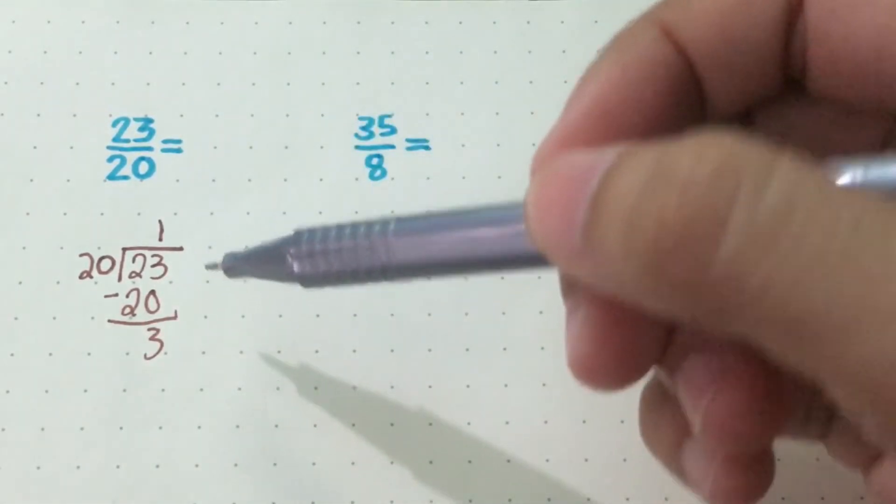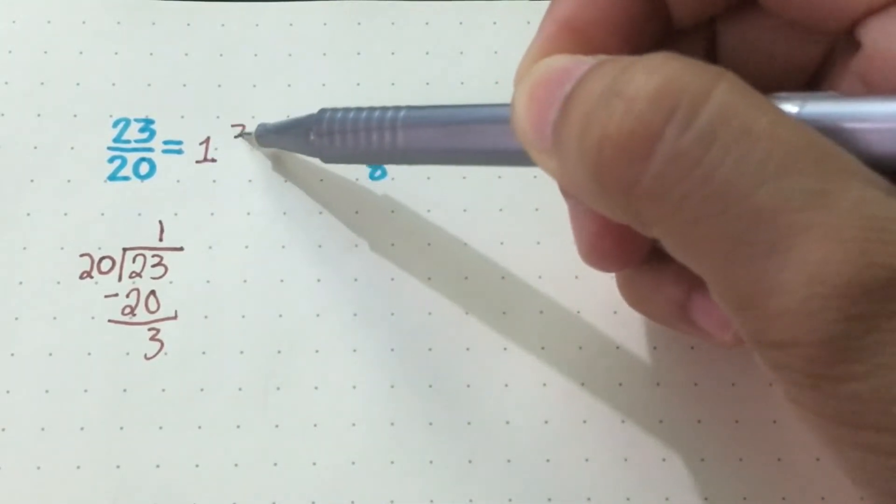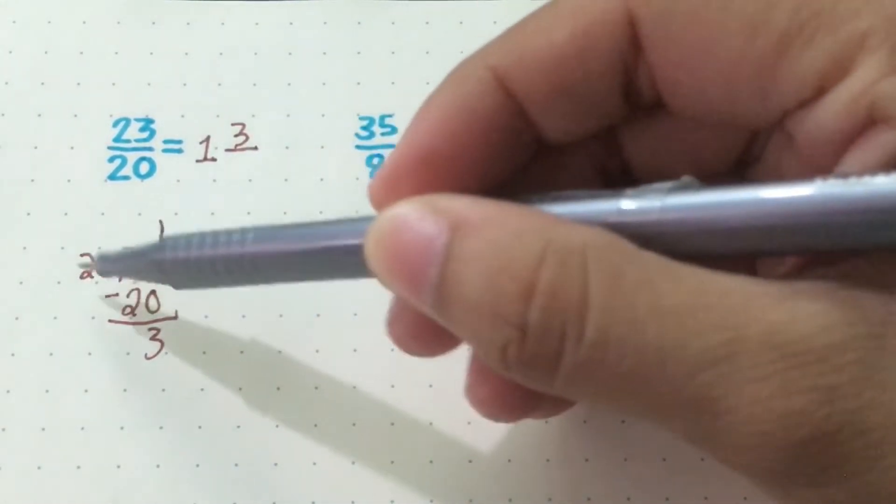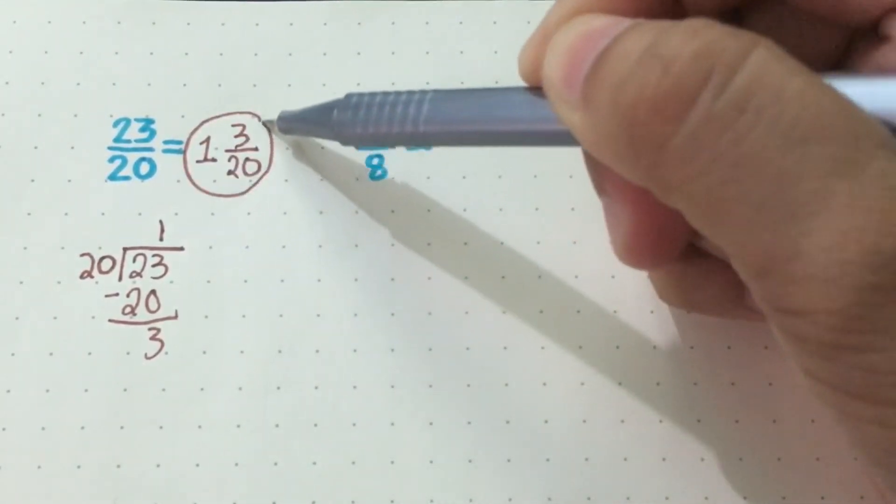Now to form the mixed number, your answer will be the whole number. The remainder will be your numerator, and the divisor we use or the denominator is 20. So it is 1 and 3 over 20.